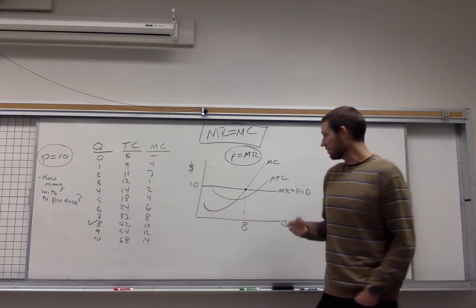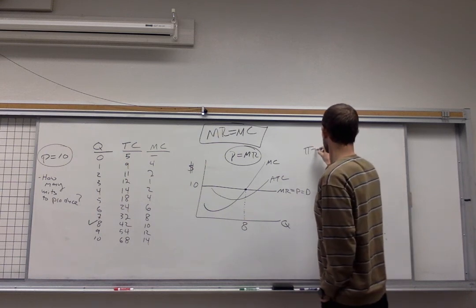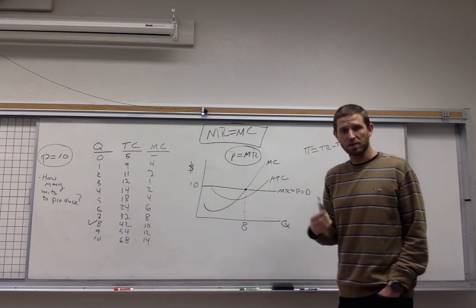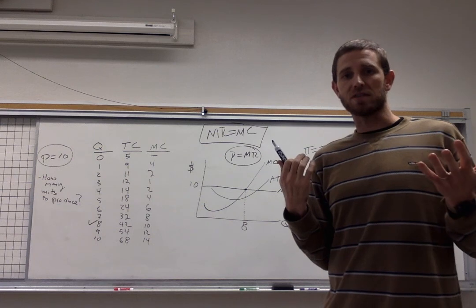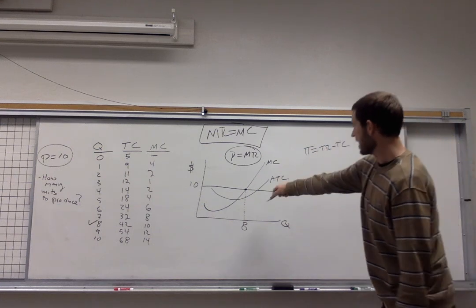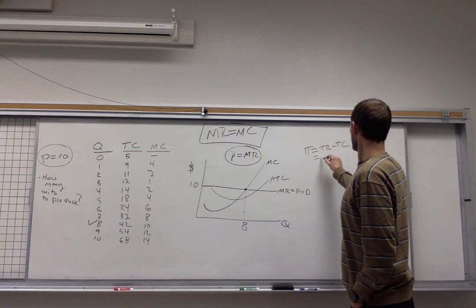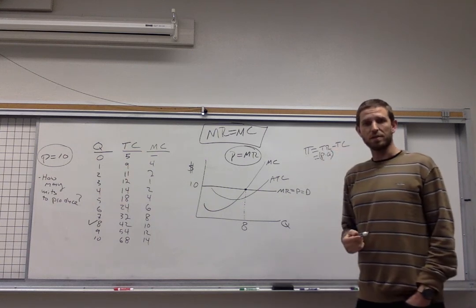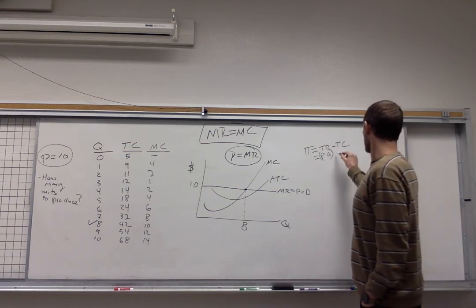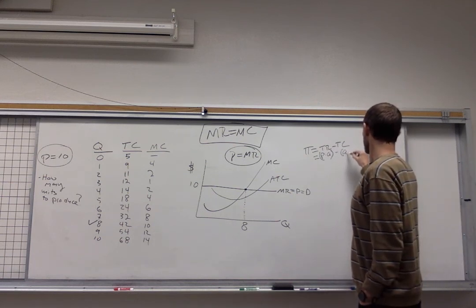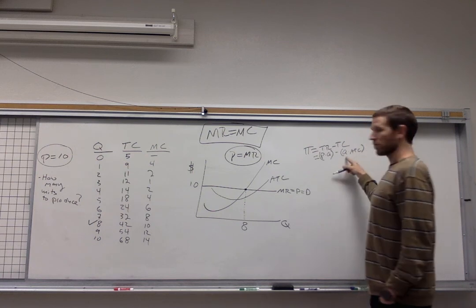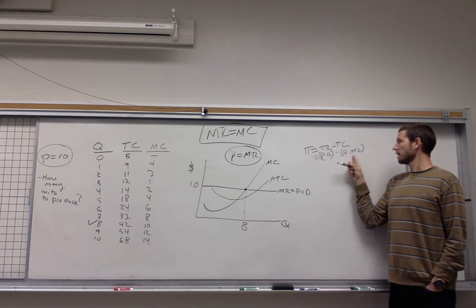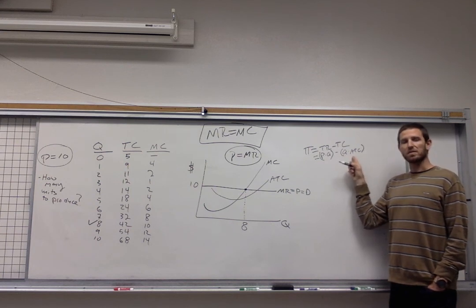In terms of calculating the firm's profit, it's going to be equal to total revenue minus total cost as the definition of profit. All the money that the firm collects minus all the costs that they have. We find that here on this graph by recognizing that total revenue is calculated as price times quantity. And total cost can be calculated as quantity times average total cost.